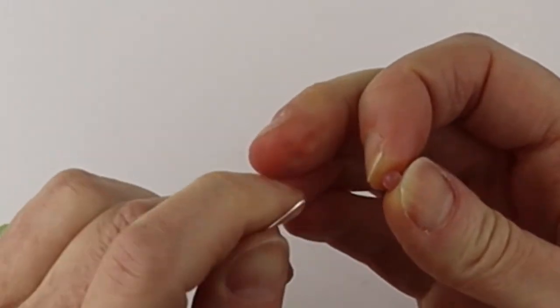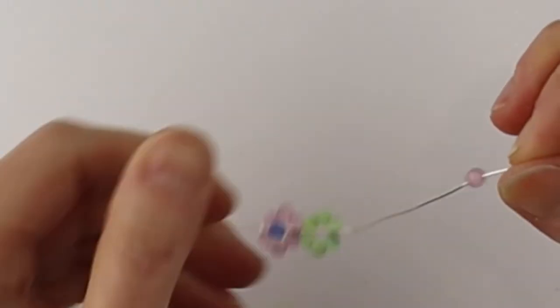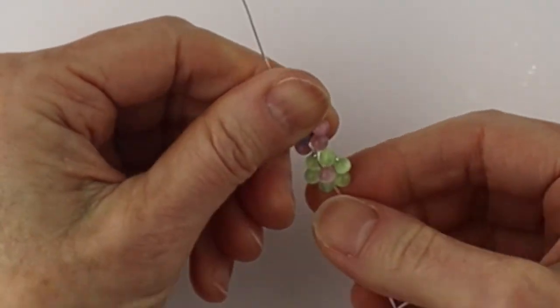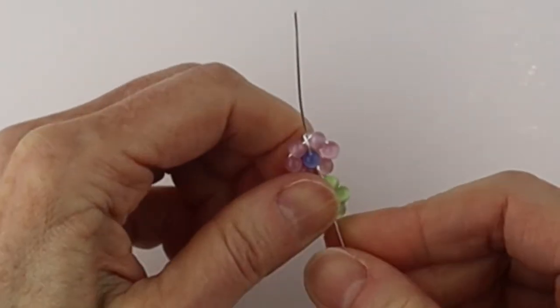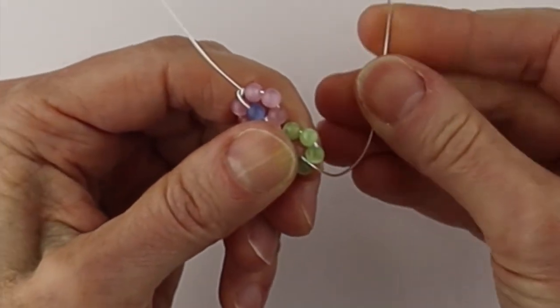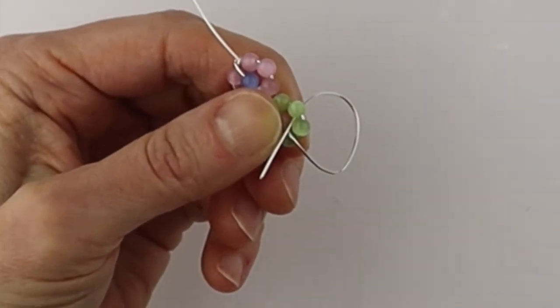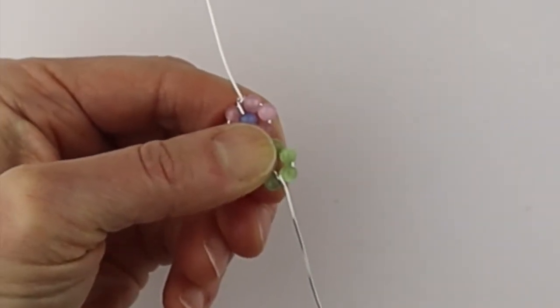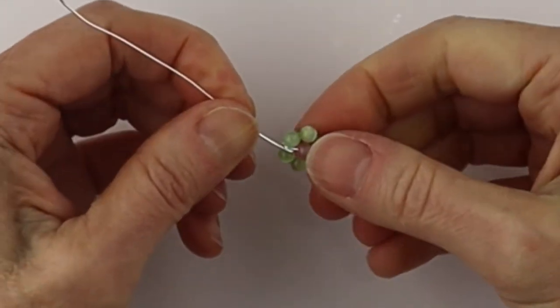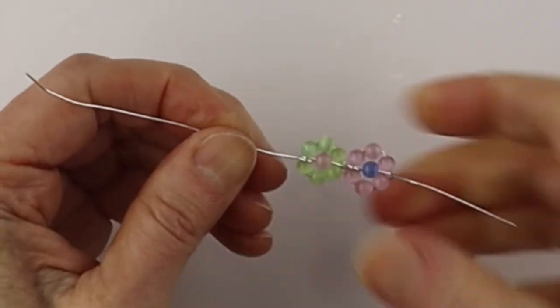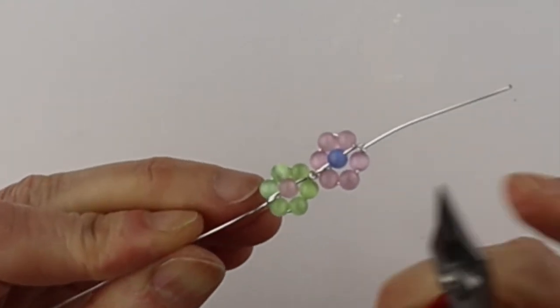Now we'll put another bead in a contrasting color in the center. Push it right in the middle, take the end and wind it through one time into the middle of the flower. Now grab the end with the pliers so you could really tug it. Bring it right down, give it a little jog so it's centered.